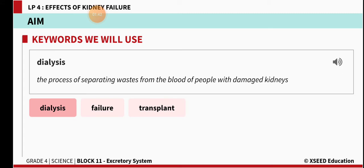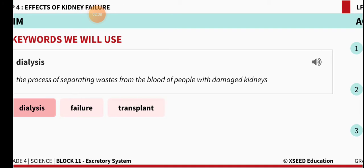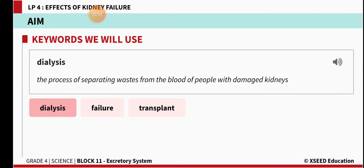The first keyword is dialysis — D-I-A-L-Y-S-I-S. Dialysis means the process of separating wastes from the blood of people with damaged kidneys. So when a kidney is damaged, waste is artificially removed from the body through dialysis.